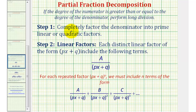For step one, we want to start by completely factoring the denominator into prime linear or quadratic factors. Once we've done this, for step two, for each distinct linear factor in the form as we see here, we'll include terms in the form of A divided by the linear factor. For the next distinct linear factor we would use a numerator of B, then C, and so on.